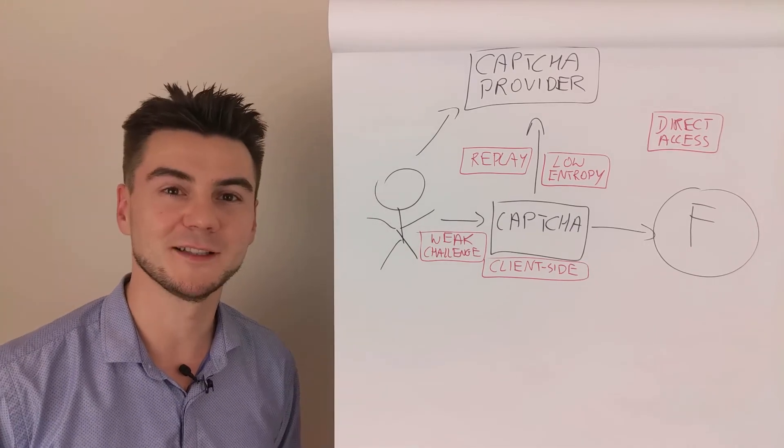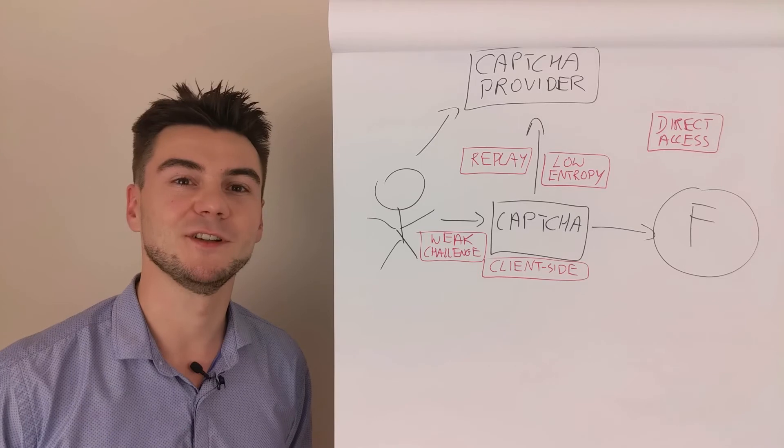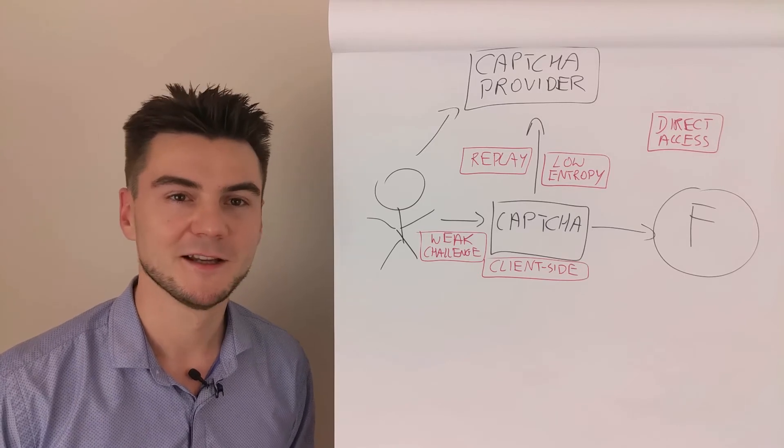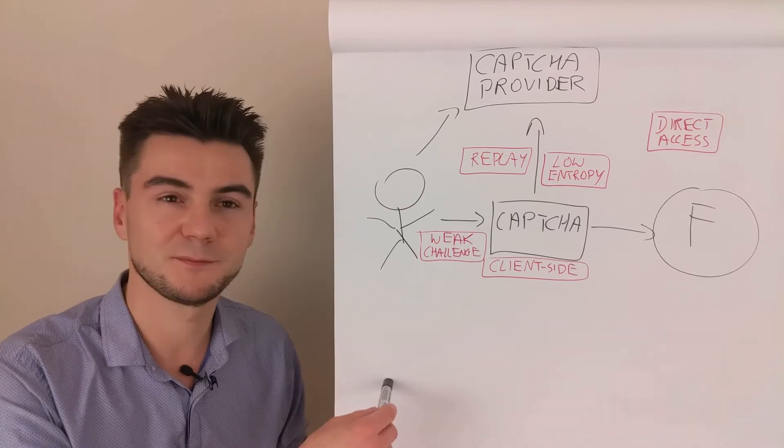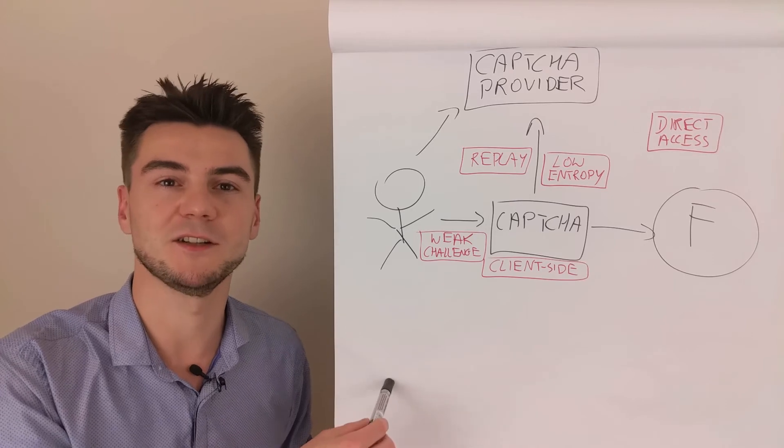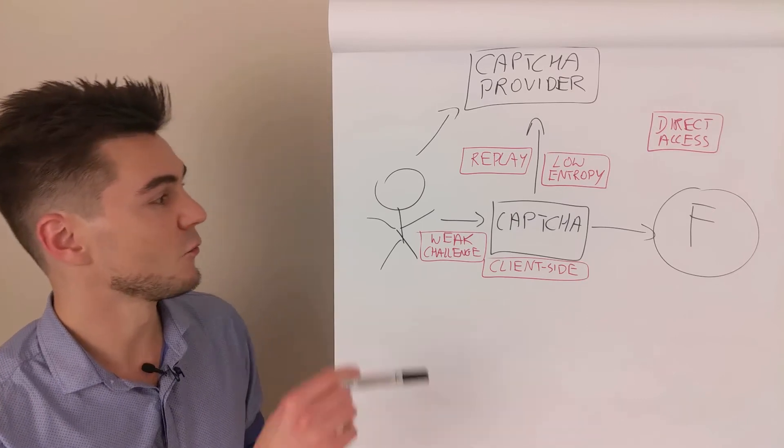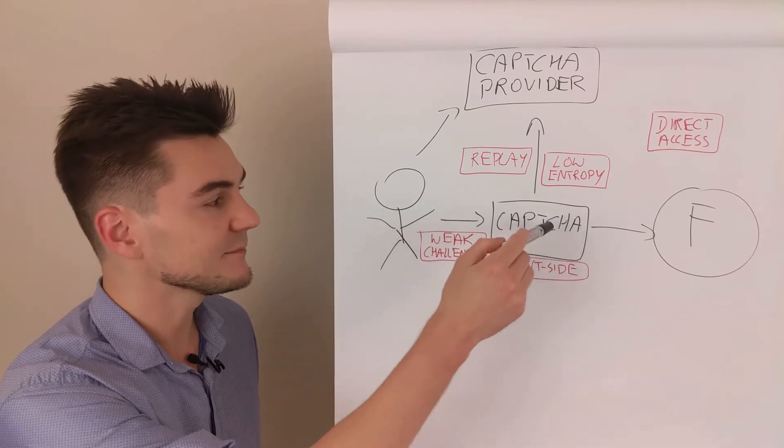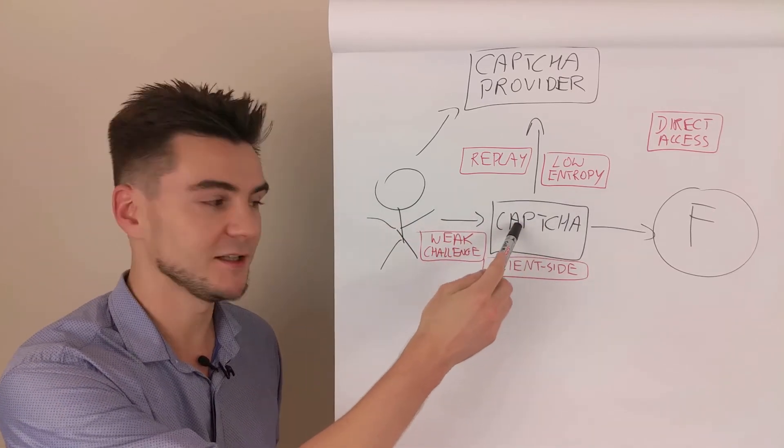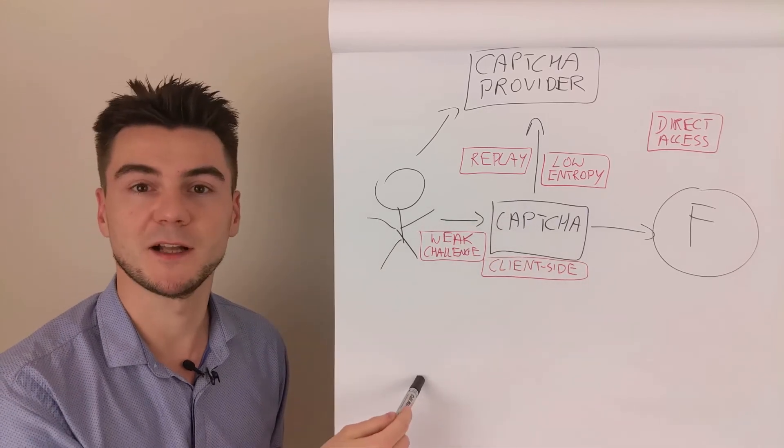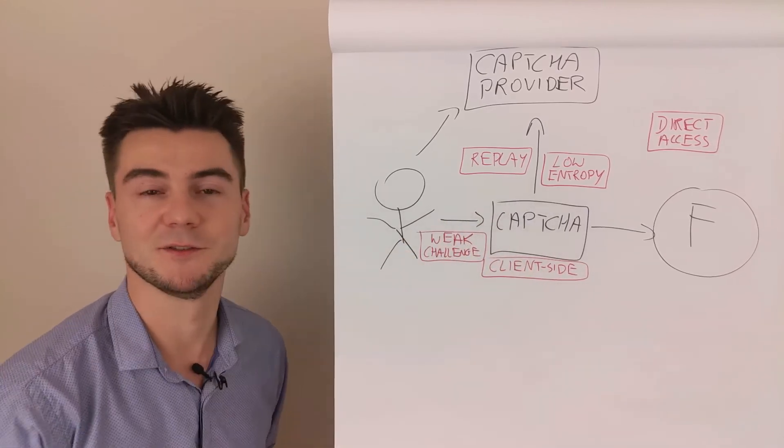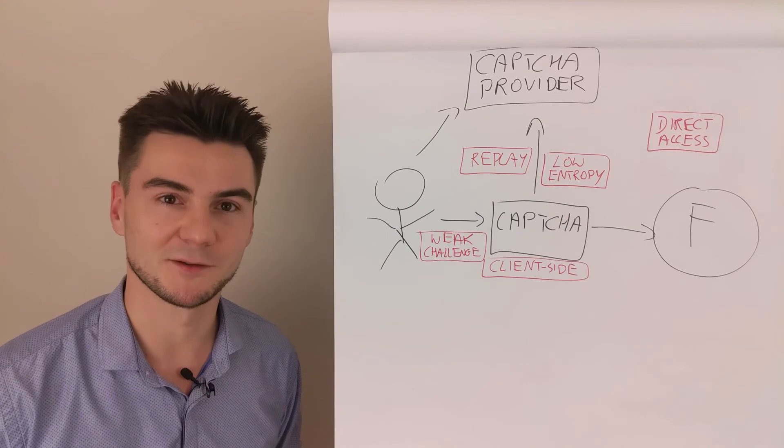There are also fun attack vectors, such as relaying CAPTCHA to a third party. So we can have another user potentially on completely another site that will solve the challenge for us. So once the user initiates the process, they grab the CAPTCHA challenge, they forward it to a third party that solves the challenge and gives it back to the user. So semi-automatic hacking.